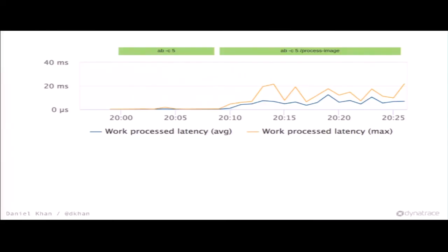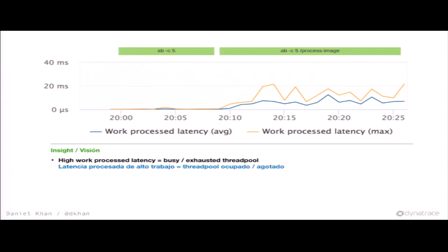If you do that you already get something meaningful. I used Apache Bench with a concurrency of 5 and then used Sharp — image processing — which utilizes the thread pool. I created a scenario where I rendered an image again and again in an Express route, and indeed you can see it clearly. A high work process latency means the thread pool is busy or exhausted — a metric people actually care about, because it shows you're doing too much on the thread pool.